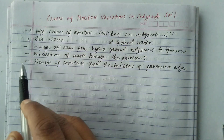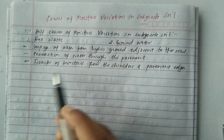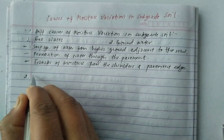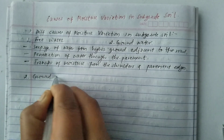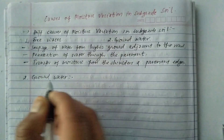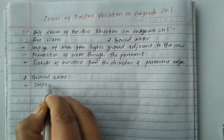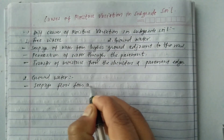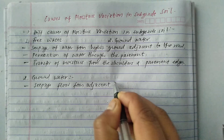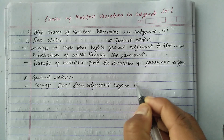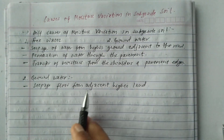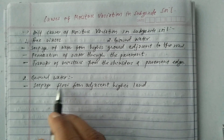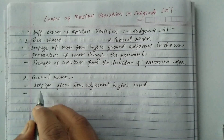Now let's see the different causes of groundwater. The first cause is seepage flow from adjacent higher land. This is seepage from the higher land to the lower land, which is the first cause of moisture variation under groundwater.